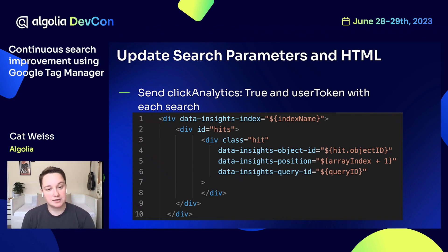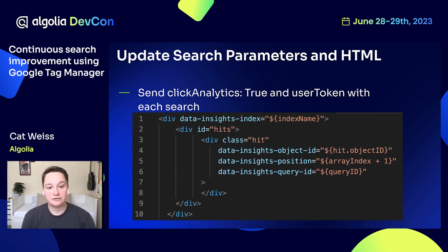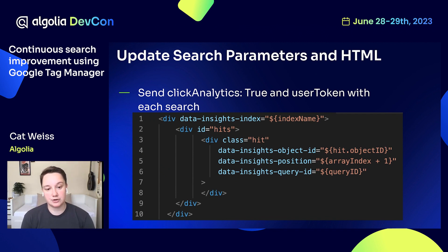The Object ID will correspond to the Object ID within the Algolia Index. Once your HTML is configured, you will need to ensure that you send two search parameters with each search you want to track. The first is setting the Click Analytics parameter to true to add the Query ID to the response of the search request. The second is the user token, which you will need to add to the Google Tag Manager data layer.